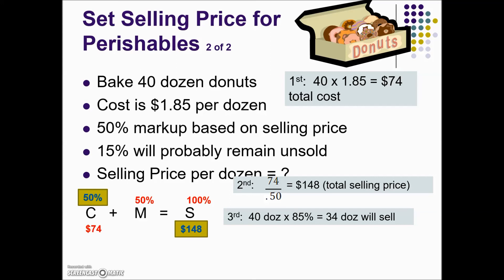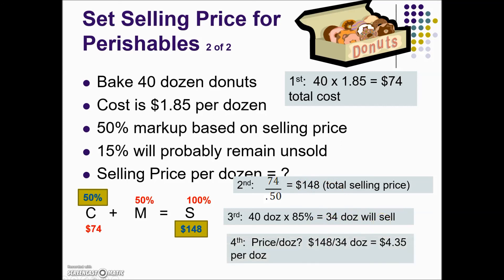We are now ready to do our last step: find the selling price per dozen. We know the amount of money desired and the number of dozen that will most likely sell. Taking our total selling price divided by the total number of dozen that will sell gives us the price per dozen.